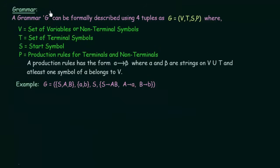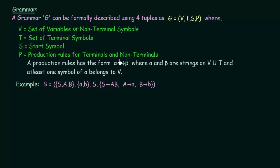Here we will see how to formally describe grammar. A grammar G can be formally described using 4 tuples given as G = (V, T, S, P), where V is the set of variables or non-terminal symbols, T is the set of terminal symbols, S is the start symbol, and P is the production rule for terminals and non-terminals.